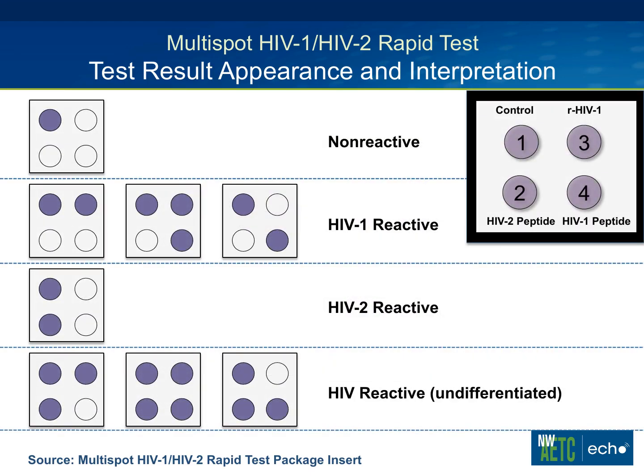The overall result is a pattern of spots that turn positive. The upper left block that you're looking at is nonreactive — the control is positive but all the rest are negative. For an HIV-1 reactive result, you always need the control positive, and then either the recombinant well, the peptide well, or both show up positive. The HIV-2 reactive is the third column down. The last pattern is where everything looks positive and you can't tell if it's HIV-1 or HIV-2 — that doesn't happen very often, but there are people infected with both.